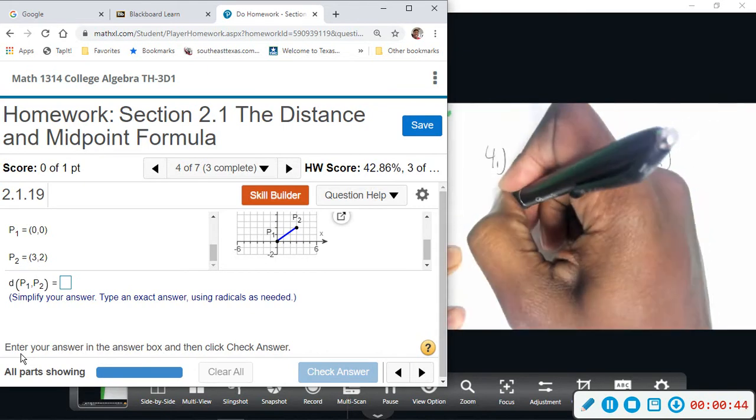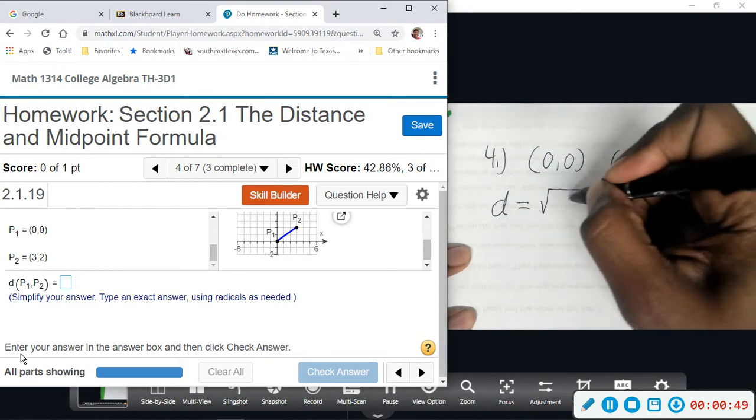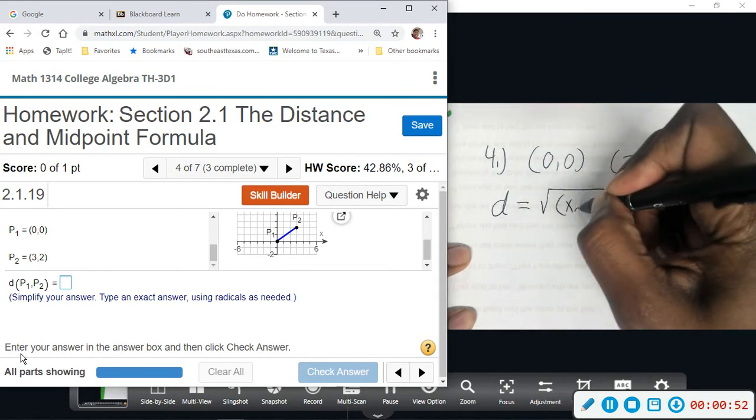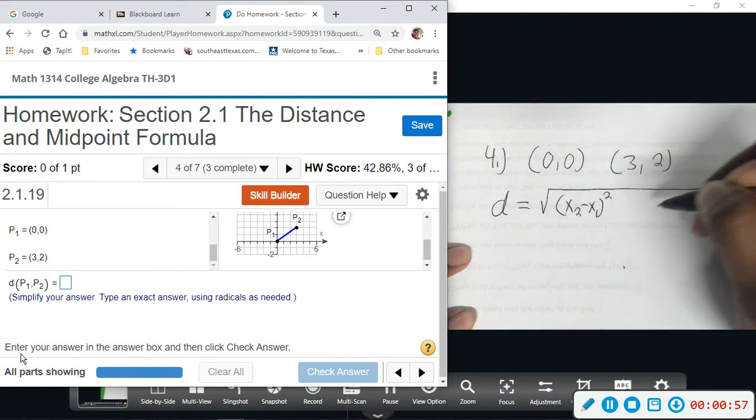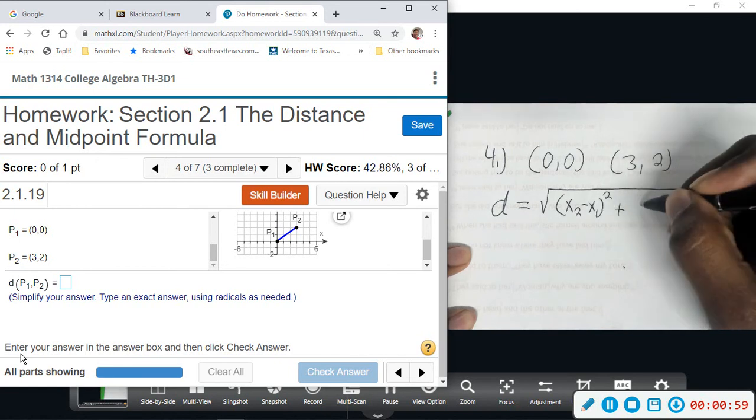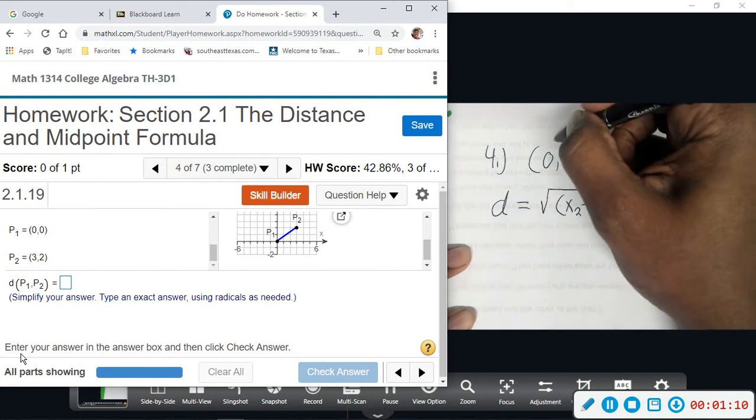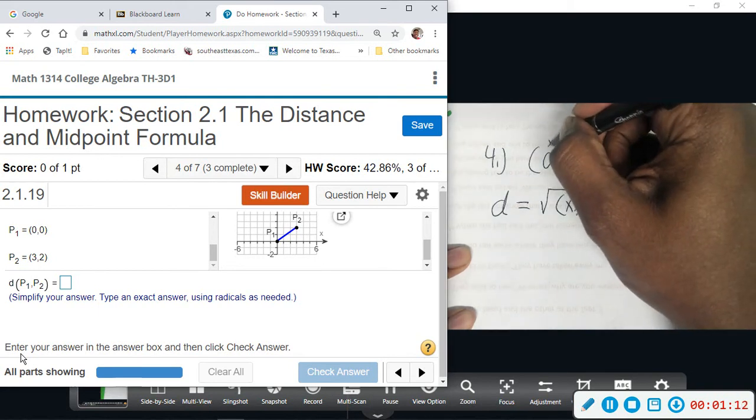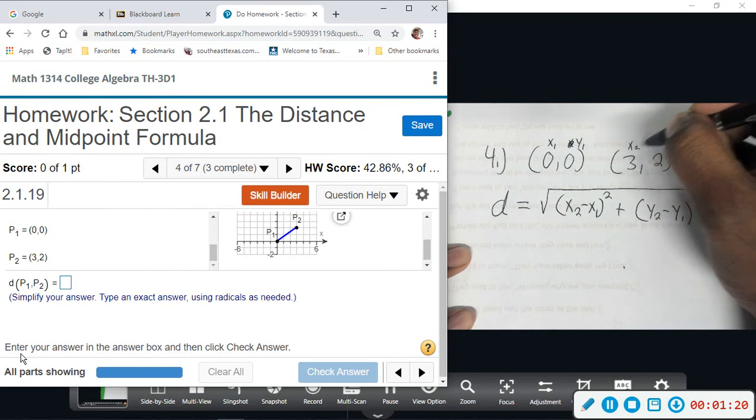The distance formula, let's remind ourselves what that is. It is a big square root, and then parentheses, X2 minus X1 quantity squared, plus Y2 minus Y1 quantity squared. And all you need to do is label them. So the first one is going to be X1 and Y1, and then the second ordered pair is X2 and Y2.